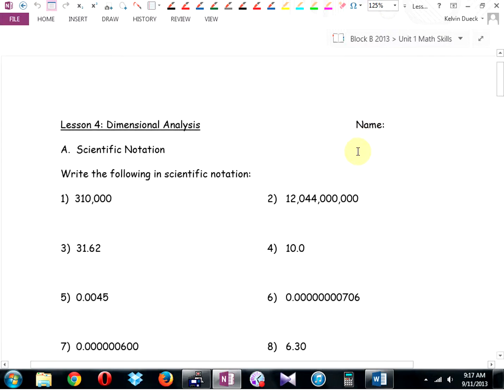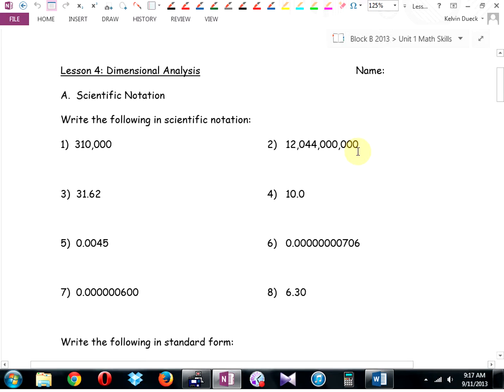So, lesson four, dimensional analysis. We've skipped lesson three, we'll come back to it. Scientific notation. I did a really quick review of this the other day, but I want to do this properly because you need to reach the point where you can do scientific notation almost in your sleep, where you can glance at a number and see it written in either scientific notation or in standard form in your head showing no work.